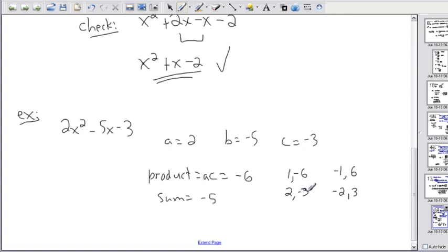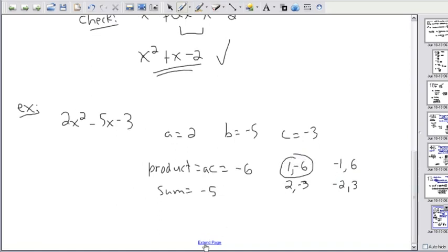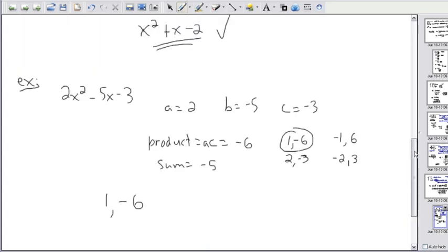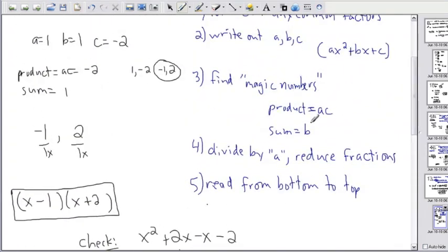Now, if you really get good at this, you'll just start to guess the numbers and that's fine. But I just want to teach you to be methodical. Just write down all of them. Then take a look. Do any of them add up to negative 5? It turns out this one here does. 1 minus 6 gives you negative 5. None of these other ones actually work for the sum. So those are my two magic numbers now. So it's 1 and negative 6. I found my magic numbers.